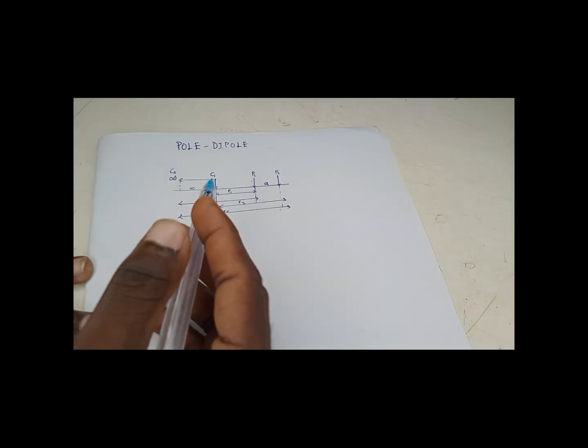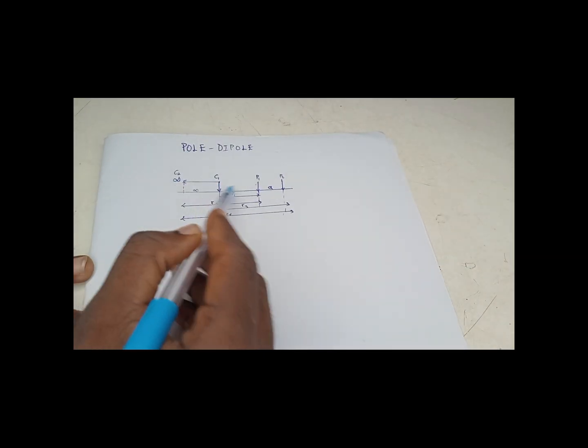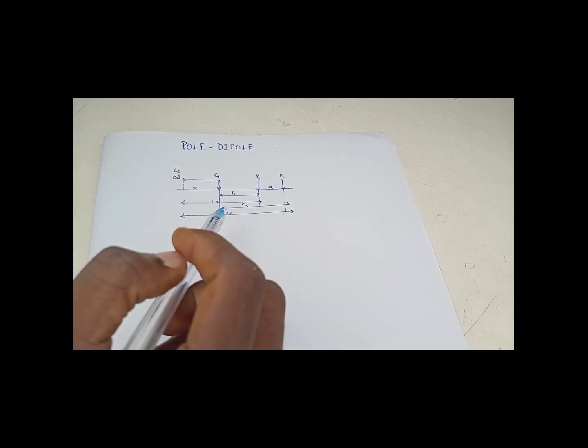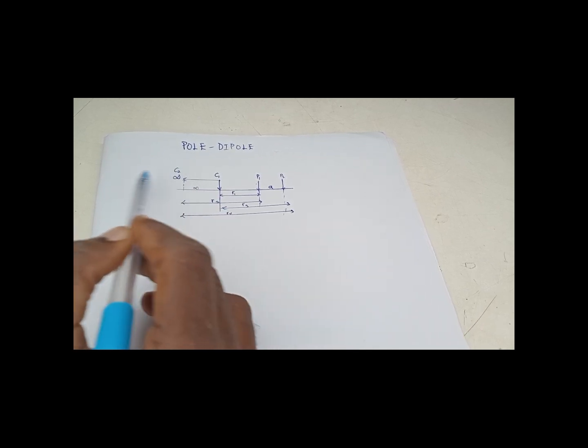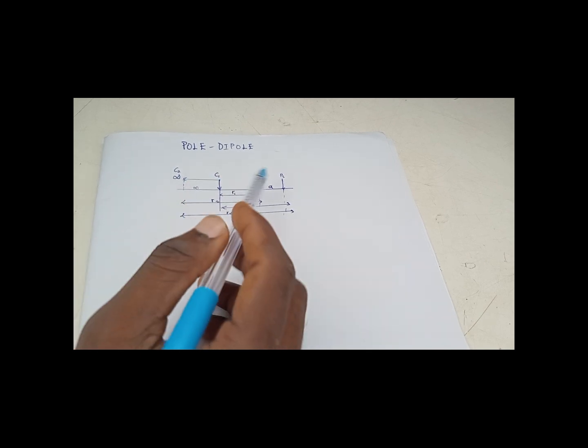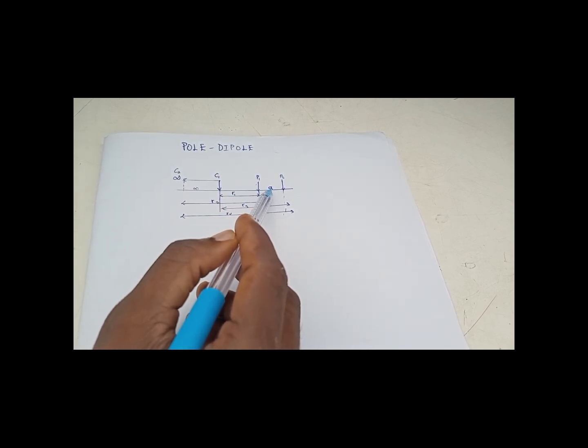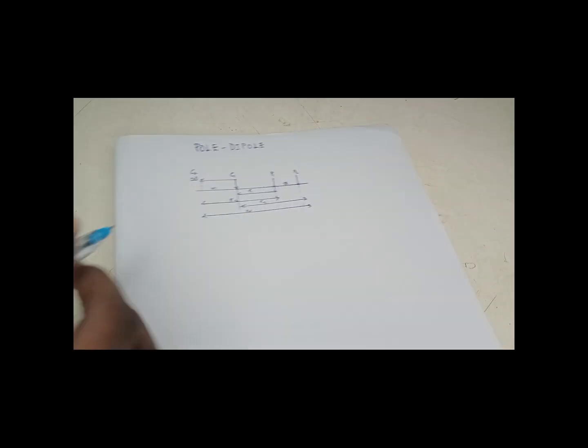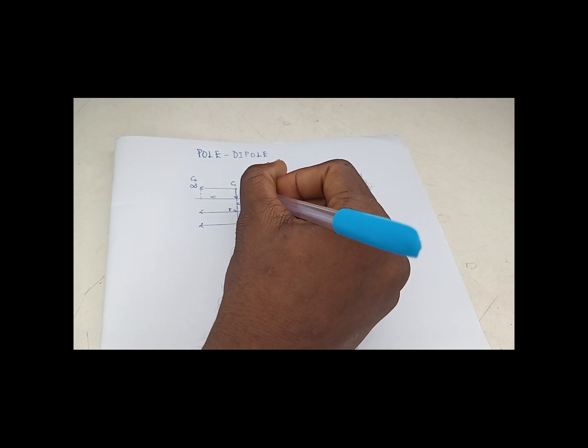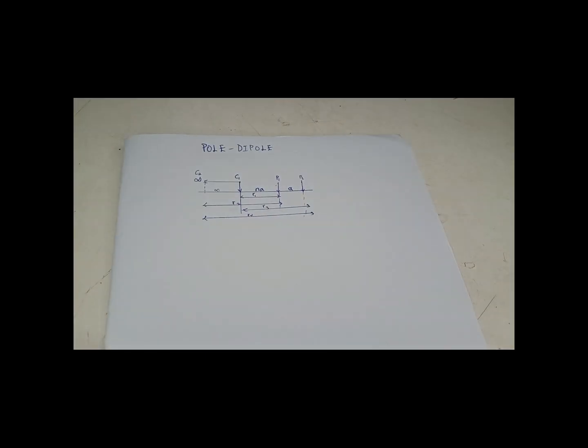So in the pole-dipole array, this is the way it has been set. C2 is dropped far away. We can also say C2 is at infinity. The second current electrode is actually very, very far away, while the P1 and P2 are distributed by a distance A, and while the C1 to P1, just like almost like the pole-dipole, is N times A.